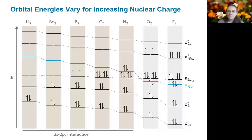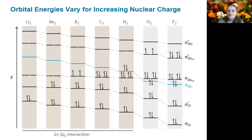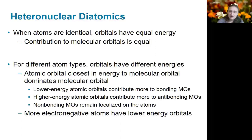There are similar pictures that can be drawn for higher principal quantum number states, but in general the atomic states get closer together and more mixings become possible, making it even more difficult to predict the ordering without additional information. For purposes of this class, if you encounter elements with higher principal quantum numbers, you'll be given information on the ordering of the molecular orbitals. So far, we've discussed homonuclear diatomics, which have identical atoms, so the atomic orbital energies are equal and the contribution of the molecular orbitals is equal. If different types of atoms are involved, the atomic orbitals have different energies, and generally the atomic orbitals closest in energy to the molecular orbital will determine its character. The lower-energy atomic orbitals — typically from the more electronegative elements — contribute more to bonding molecular orbitals, and higher-energy orbitals contribute more to the anti-bonding molecular orbitals.